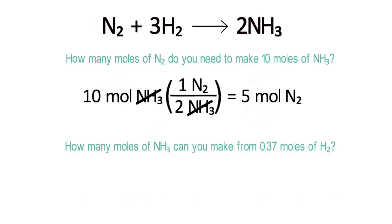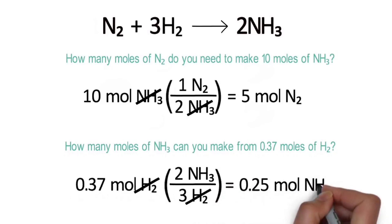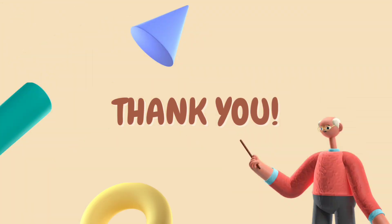How many moles of ammonia can you make from 0.37 moles of hydrogen? We put the ratio of ammonia to hydrogen: 0.37 mol H₂ × (2 mol NH₃ / 3 mol H₂) = 0.37 × 2 ÷ 3 = approximately 0.25 moles of ammonia. These mole values can then be converted into grams. Remember: number of moles = mass ÷ molar mass of the substance. That brings us to the end of the lesson — remember to do all the activities in this class. I'll see you soon. Stay safe.